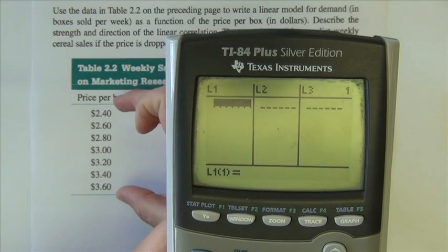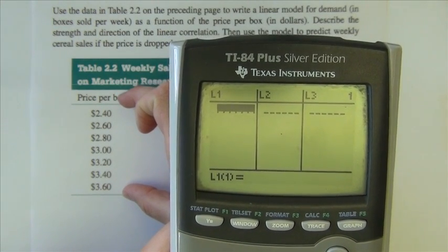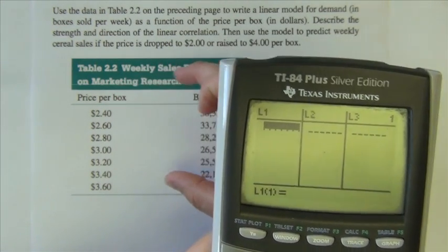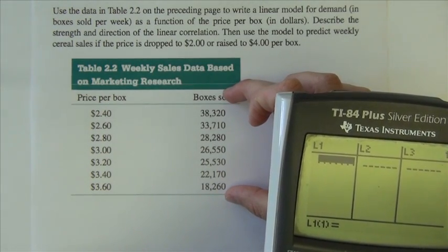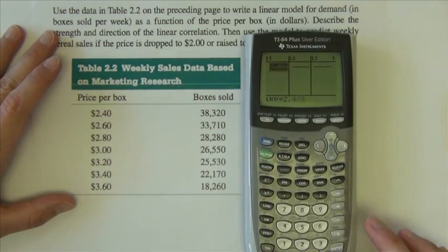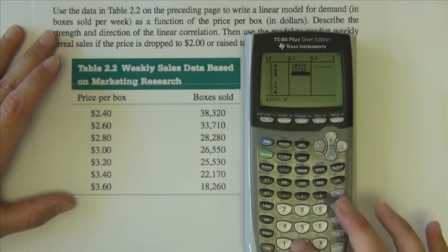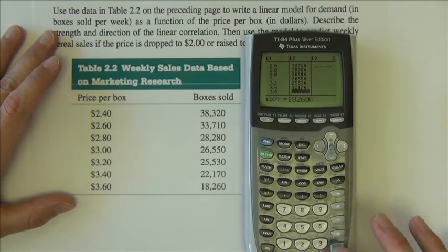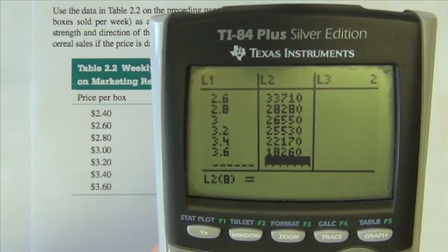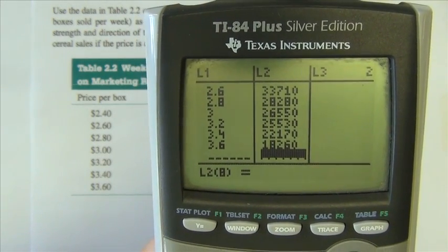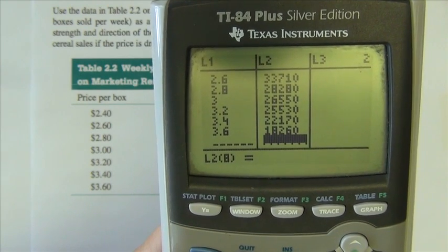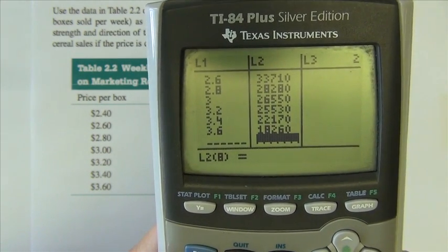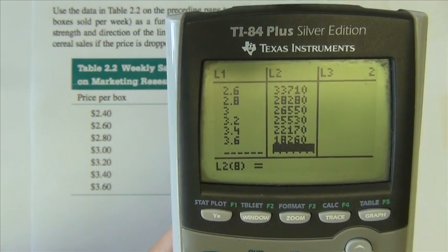What I'm going to do - let's type in the price per box numbers in L1, and let's type in the boxes sold numbers in L2. With those numbers typed in, we're now ready to go to the next phase of this problem. What we'd like to do now is have the calculator plot the points - we'd like to see a scatter plot of this data.